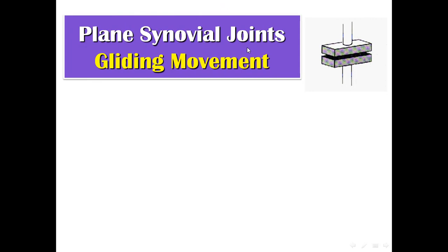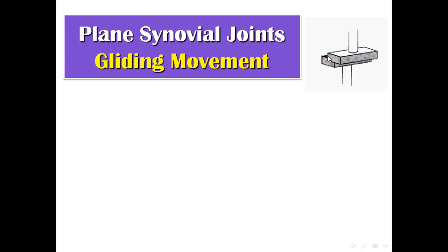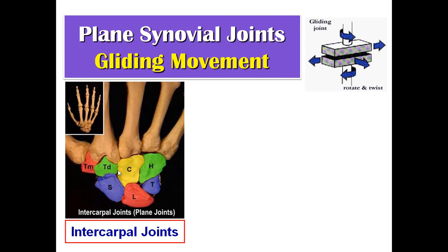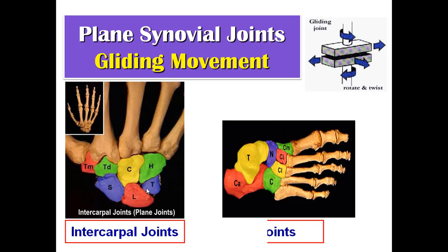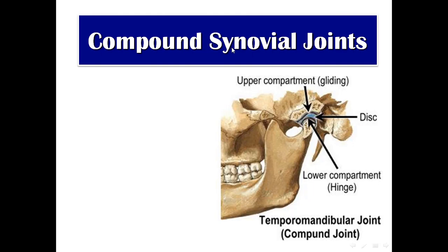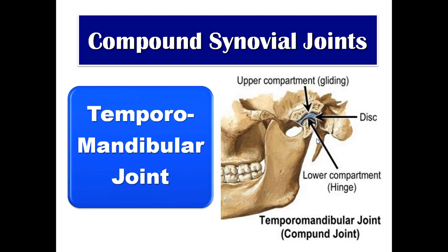Plane synovial joints have an almost flat articular surface, so the movement is gliding or sliding — the bones glide or slide on each other. Examples: intercarpal joints between the carpal bones, and intertarsal joints between the tarsal bones. The compound synovial joint has only one example: the temporomandibular joint, which is divided into two joints by an articular disc.